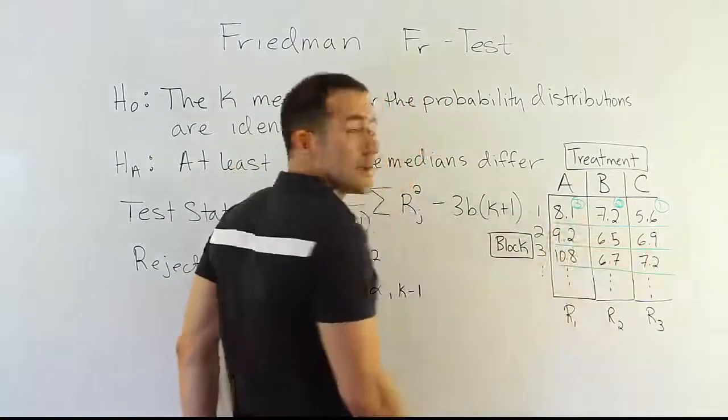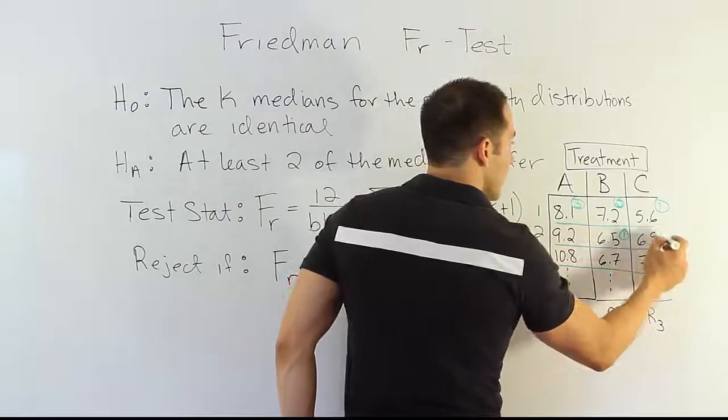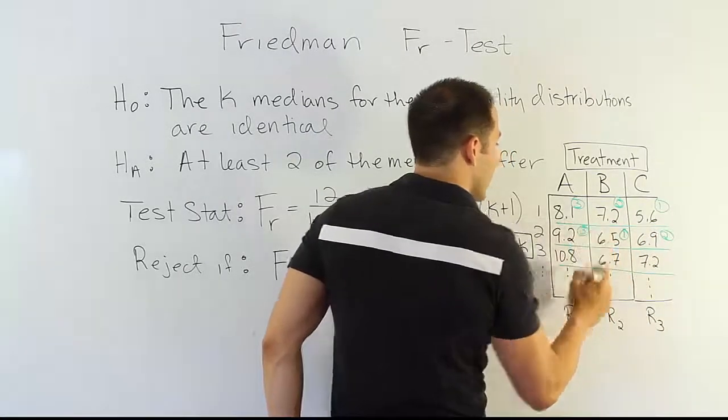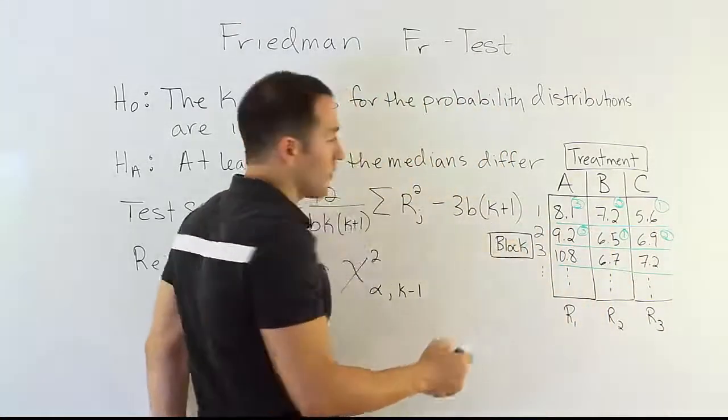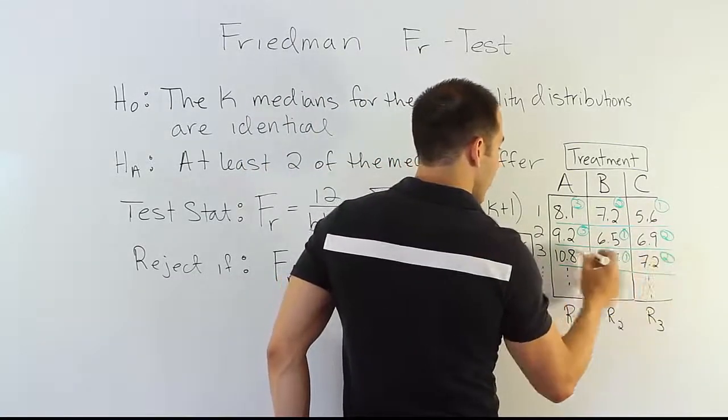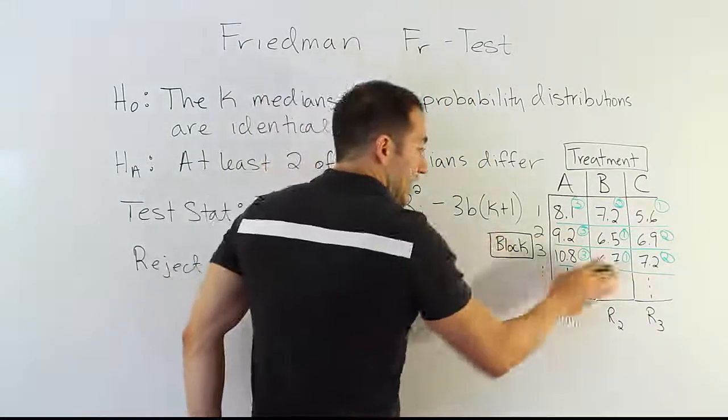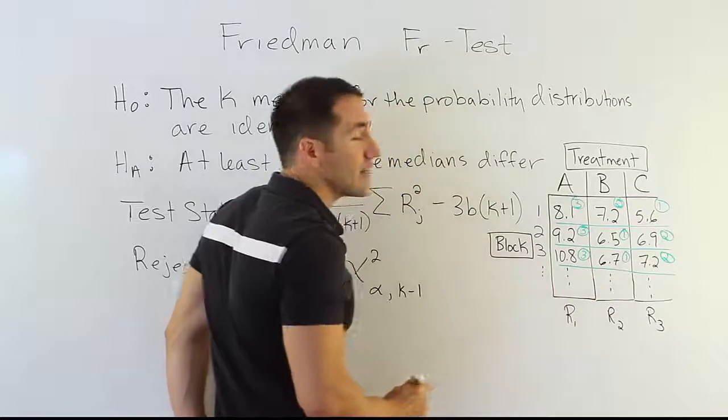And then we come to the second line and we do the same thing. This is the smallest, it gets rank 1, this would get rank 2, this would get rank 3, and so on and so forth. For the next line we say this gets rank 1, this gets rank 2, this gets rank 3. And then at the end, once we've ranked each block going across like that, we'll actually add up the columns.